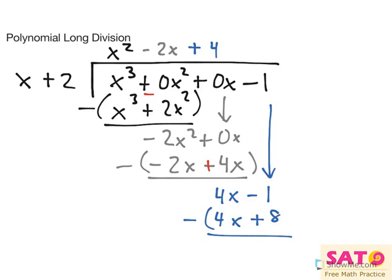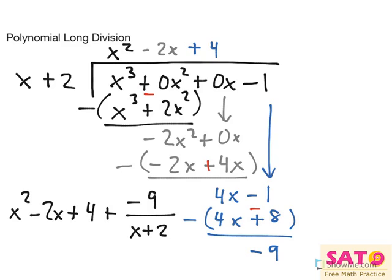Subtract. Almost done. And we would get negative 9 as our remainder. So we would write this as x squared minus 2x plus 4 plus a remainder of negative 9 over x plus 2. And that's our final answer.